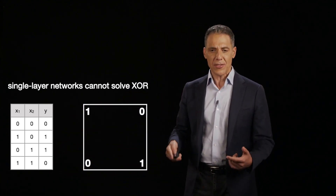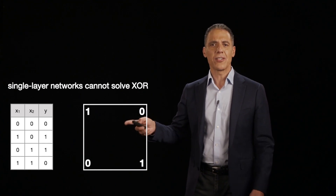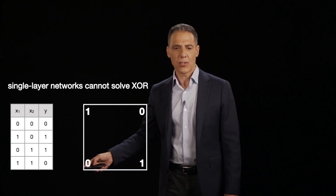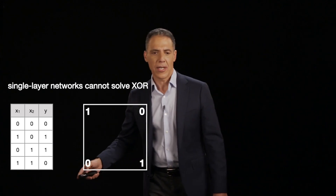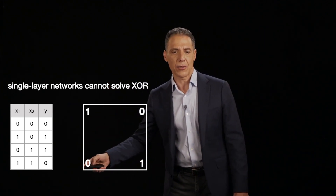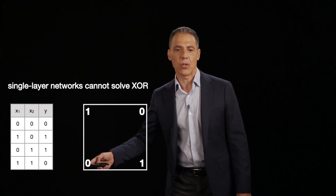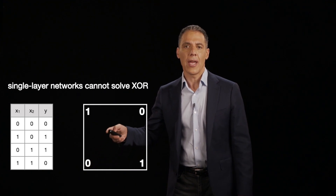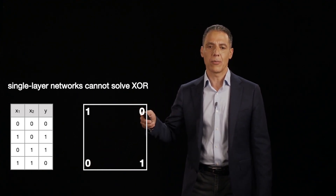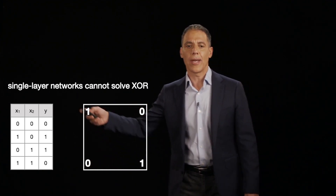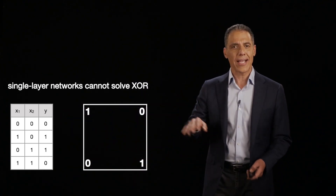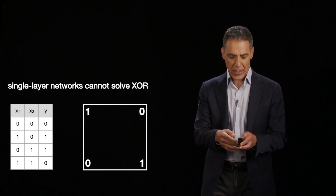You can think about this in terms of this picture here. If this is X1 and this is X2, then (0,0) has label 0, and (1,1) has label 0, and then (1,0) and (0,1) have label 1 each. So that's the space we occupy.